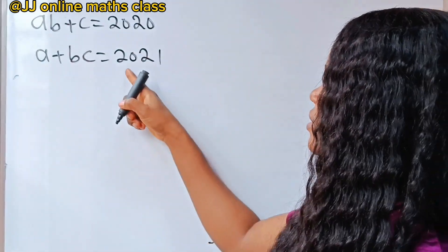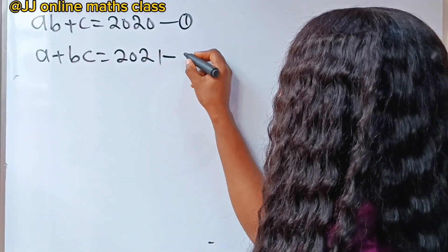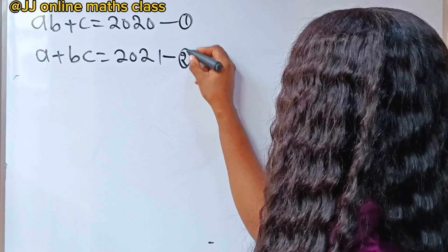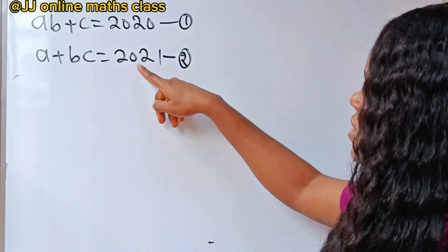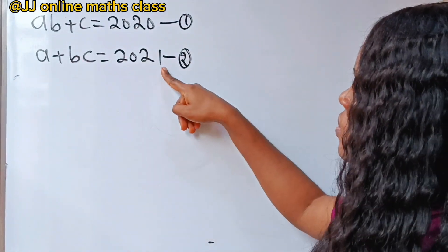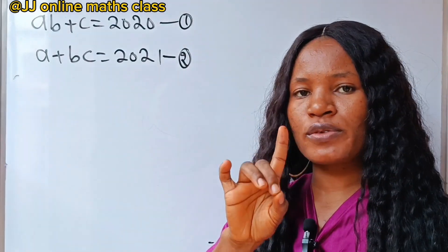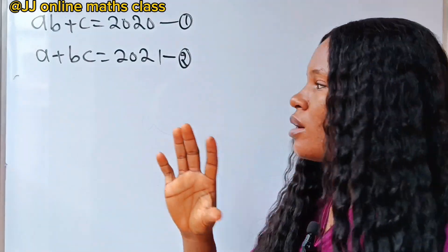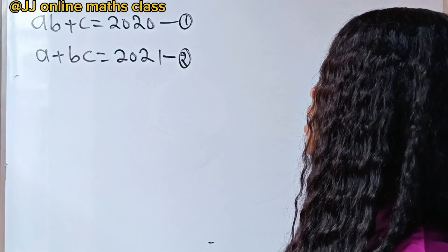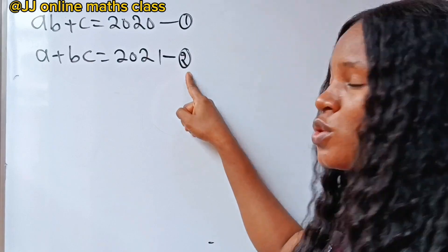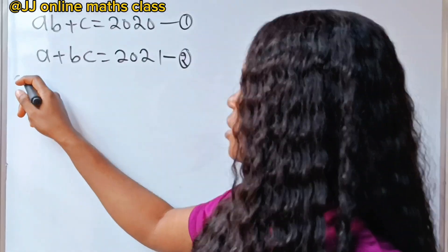First, let's call this equation 1 and this equation 2. Now, notice that if we say 2021 minus 2020, we are going to have just 1. So, to simplify these two equations, let's say equation 2 minus equation 1.